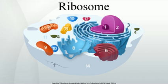The ribosomal subunits of prokaryotes and eukaryotes are quite similar. The unit of measurement is the Svedberg unit, a measure of the rate of sedimentation in centrifugation rather than size, and this accounts for why fragment names do not add up.